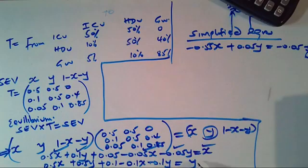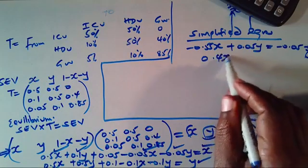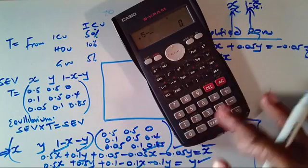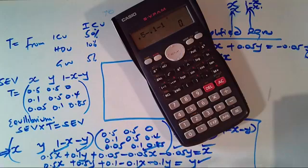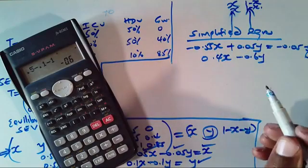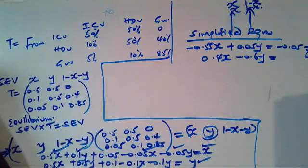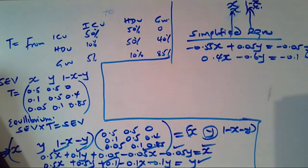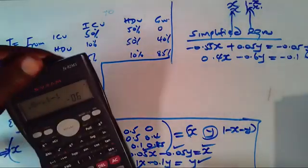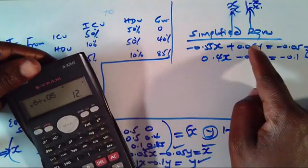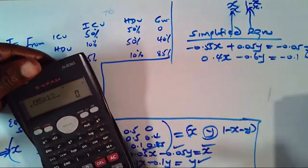To eliminate Y, multiply equation 1 by 12 (since 0.05 × 12 = 0.6): −6.6X + 0.6Y = −0.6. Now add this to equation 2: (0.4 − 6.6)X = −0.1 + (−0.6), giving −6.2X = −0.7.